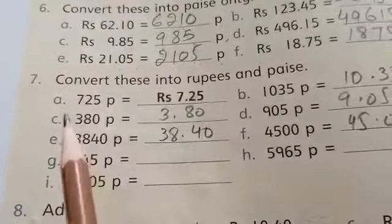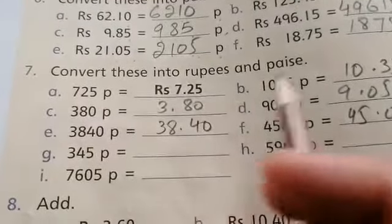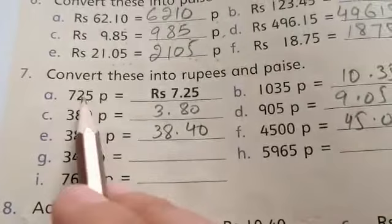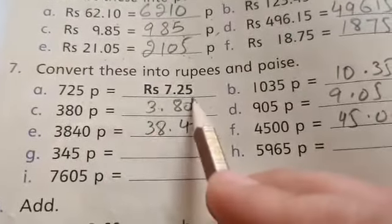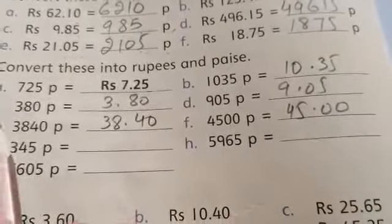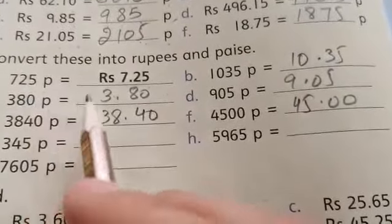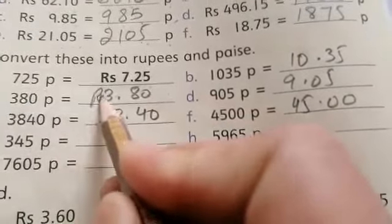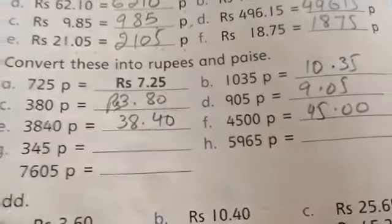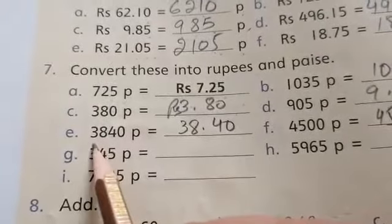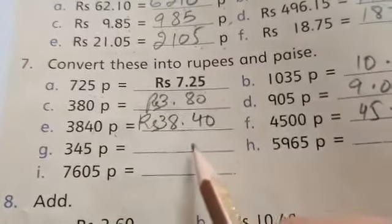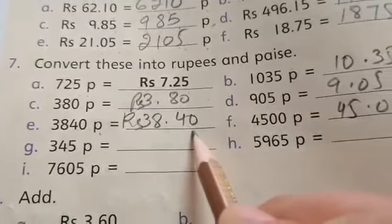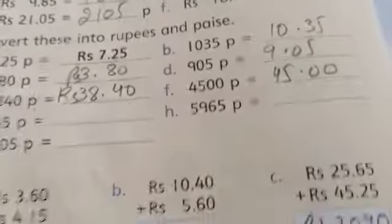Question number 7. Convert these into Rupees and Paisa. 725 paisa means Rupees 7.25. 380 paisa means Rupees 3.80. 3,840 paisa means Rupees 38.40. Complete the rest of the parts.